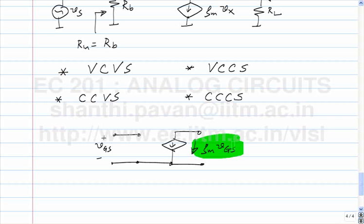In the limit of infinite gm, you can treat the transistor like the angry young man of Hindi movies — it does not take very much to push the guy off. The moment the incremental gate-source voltage changes by a small amount, a massive current flows between the drain and the source. Does this remind you of something we have seen so far? This is very similar to an operational amplifier.